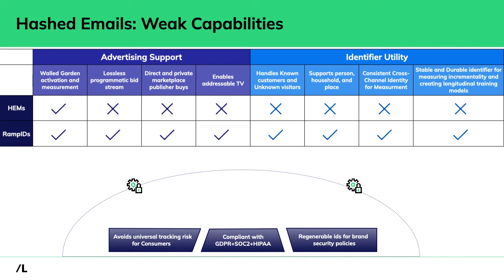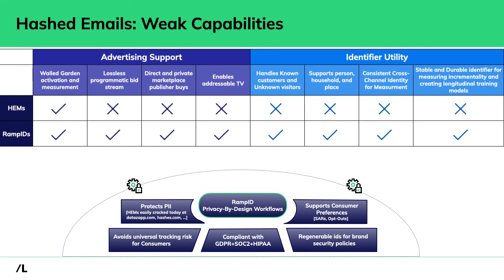If there is any risk from a brand security issue — an insider threat or a data breach — you wouldn't want to communicate with breach data. RampIDs can be safely regenerated, giving you a new set of RampIDs that still refer to the same individuals but have a completely different data profile so they can't be tracked on the web. If you have a HEM and are doing any form of collaboration, in about five minutes we can go to hashes.com or datazap.com and show you the original source of those emails — HEMs are very reversible. RampIDs are not. They're also built in with support for opt-outs, subject access requests, and evolving consumer data privacy needs.